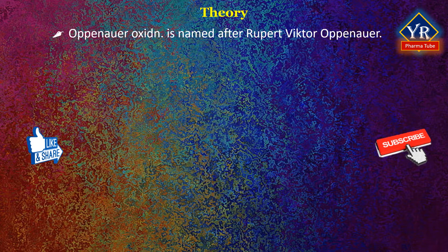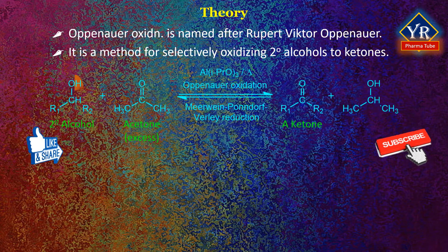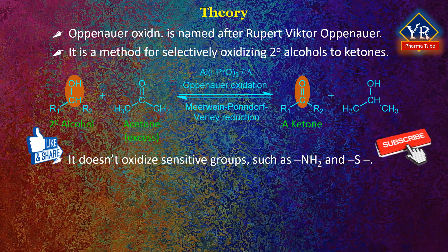Oppenauer Oxidation Reaction is named after the scientist Rupert Victor Oppenauer. It is a method of oxidizing secondary alcohols to ketones selectively. As shown in the figure, the reaction is the opposite of Meerwein-Pondorf-Verley reduction reaction. In the reaction, the alcohol is oxidized with aluminum isopropoxide in excess acetone, which shifts the equilibrium toward the product side. The oxidation is highly selective for secondary alcohols and does not oxidize other sensitive functional groups such as amines and sulfides.